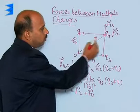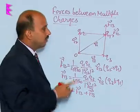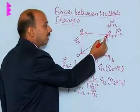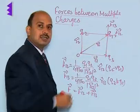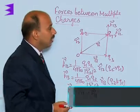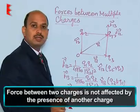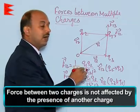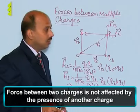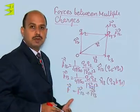So total force on any one of the charges is equal to the vector sum of the forces acting on the charge due to the presence of the other charges taken individually. And see here, when the forces we are calculating, the forces are not affected by the presence of the other charges. So this is also known as the principle of superposition.